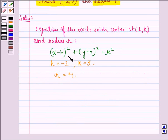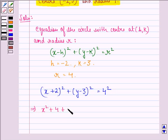So we simply put in these values in the formula and we get x minus (-2) becomes (x + 2)² plus (y - 3)² is equal to 4². Now we open the bracket on the left hand side we get x² + 4 + 4x + y² + 9 - 6y = 16.